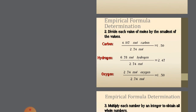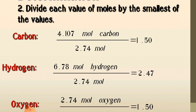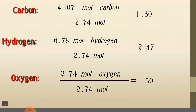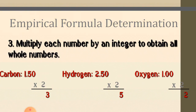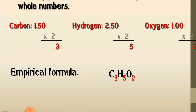The smallest mole value is 2.74 (oxygen). Divide each value by 2.74: C = 4.11/2.74 ≈ 1.5, H = 6.85/2.74 ≈ 2.5, O = 2.74/2.74 = 1. To get whole numbers, multiply all by 2: C = 1.5×2 = 3, H = 2.5×2 = 5, O = 1×2 = 2. So the empirical formula is C₃H₅O₂.